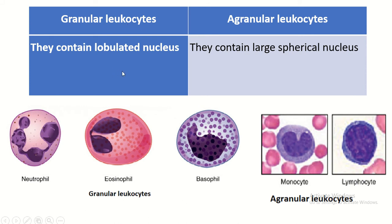The granular leucocytes contain a lobulated nucleus. The neutrophil contains multiple lobulated nucleus with multiple lobes. Eosinophil usually contains a bilobed nucleus, and basophil also contains a bilobed nucleus, though it is difficult to see due to the presence of irregularly shaped granules. The agranular leucocytes differ: monocyte has a kidney or bean-shaped nucleus, and lymphocyte nucleus is spherical.